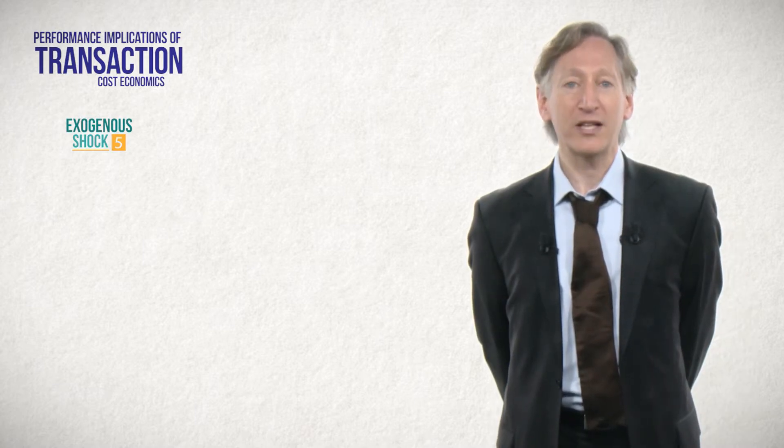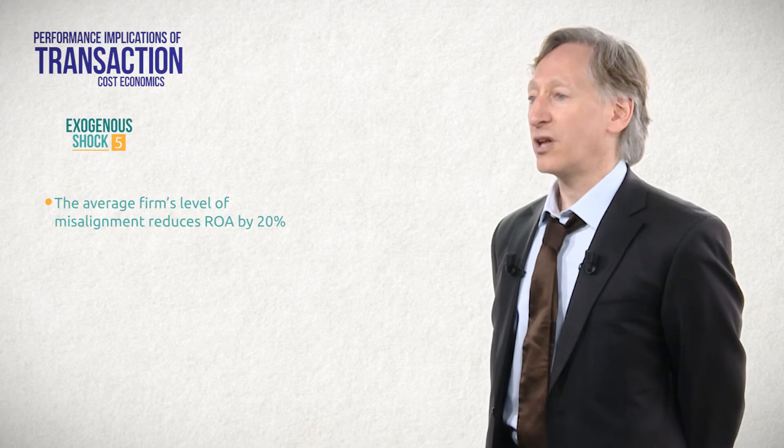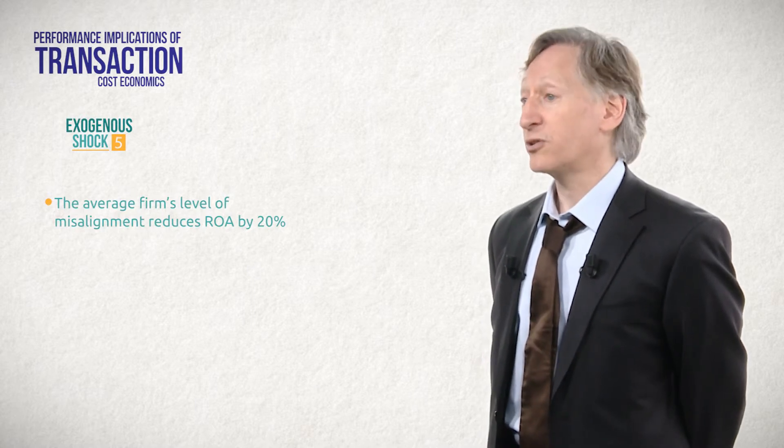Jackson Nickerson and Brian Silverman provide an example of exploiting a shock in their study of the U.S. interstate trucking industry after it was deregulated somewhat unexpectedly. Suddenly, firms that were appropriately organized for the regulated environment were inappropriately organized for the unregulated environment. The authors identified the extent to which each firm's type of traffic was based on specific assets or required time-specific coordination. They then linked this to appropriate reliance on employee drivers using company-owned trucks versus independent contractor drivers using their own trucks. Nickerson and Silverman found that misalignment in the driver transaction had a substantial penalty in terms of profit, with the average level of misalignment in the sample reducing return on assets by 20%. Further, misaligned trucking firms were more likely to go out of business than their counterparts that were appropriately aligned.